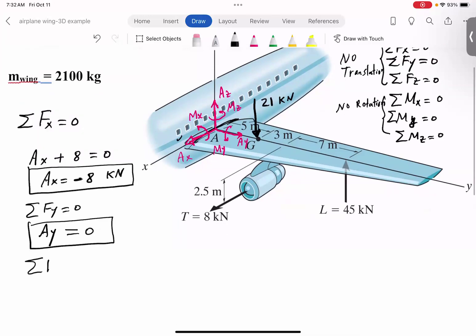And then finally, sum of the forces in Z equals zero will give what? So we have Az. Look, you have the lift, which is pulling, going up, and then the weight, which is going down, negative 21. So A sub Z becomes negative 24 kilonewtons. And you just leave it like that.